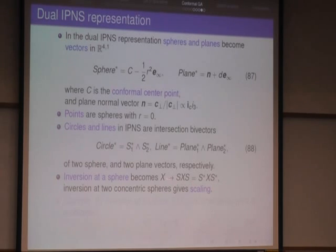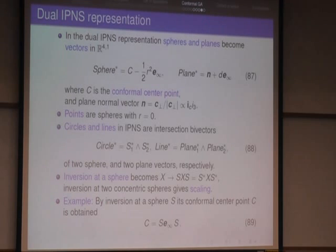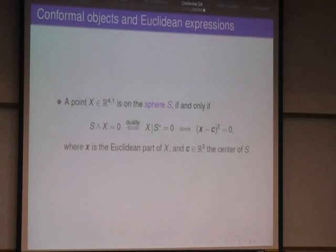And with the reflection operation, you can now do inversion at a sphere. And an application is invert the infinity point that gets the conformal center point. And here, this is the condition of a point x on the sphere, and this is identical to the distance from the center to be equal, so actually it should not be zero, it should be the radius r squared here, so there's a mistake.